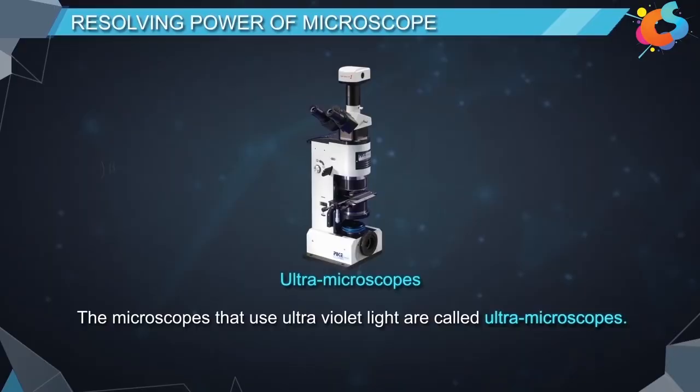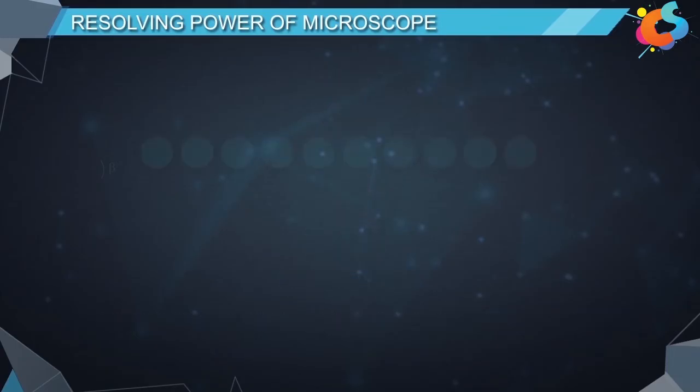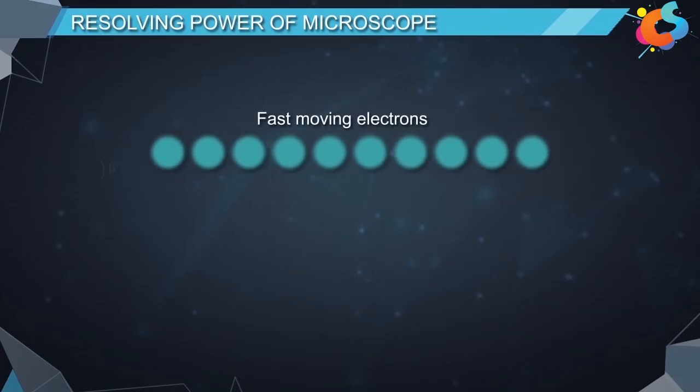The microscopes that use ultraviolet light are called ultramicroscopes. To achieve still higher resolving power, a beam of fast moving electrons are used.